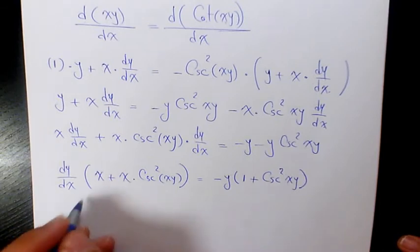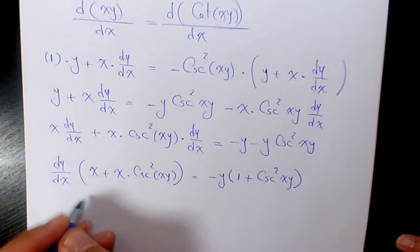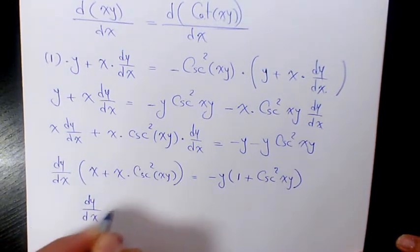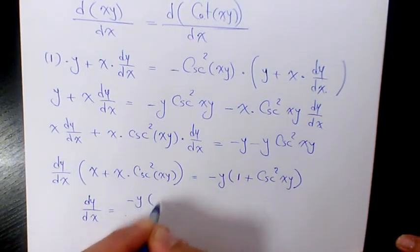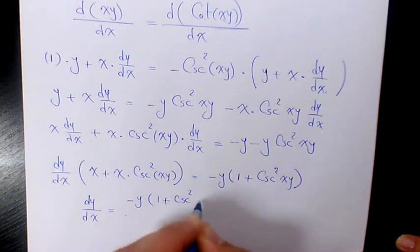Then I can say dy over dx equals negative y times one plus cosecant squared xy over x times one plus cosecant squared xy.